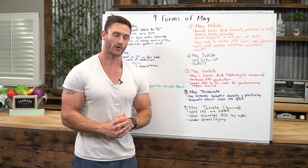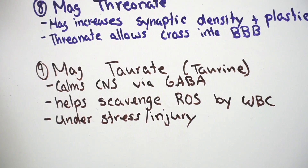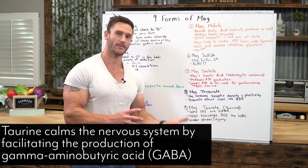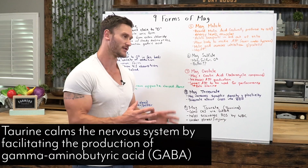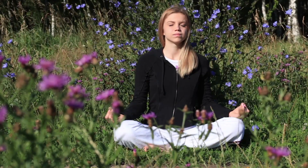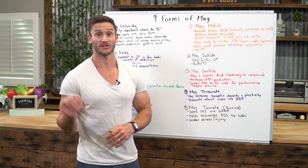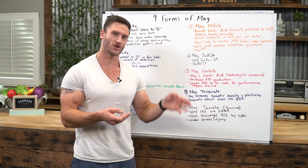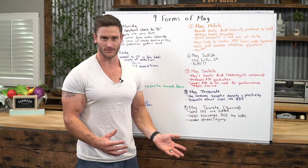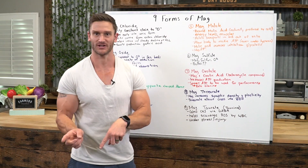Lastly, magnesium taurate is essentially magnesium bound with taurine — another chelated one. It calms the central nervous system in a different way, via gamma-aminobutyric acid, via GABA. This helps you get a nice sense of calm and relaxation. It also helps scavenge reactive oxygen species created by white blood cells. So if you have an injury or if you're sick, mag taurate could be really good because it helps scavenge free radicals.